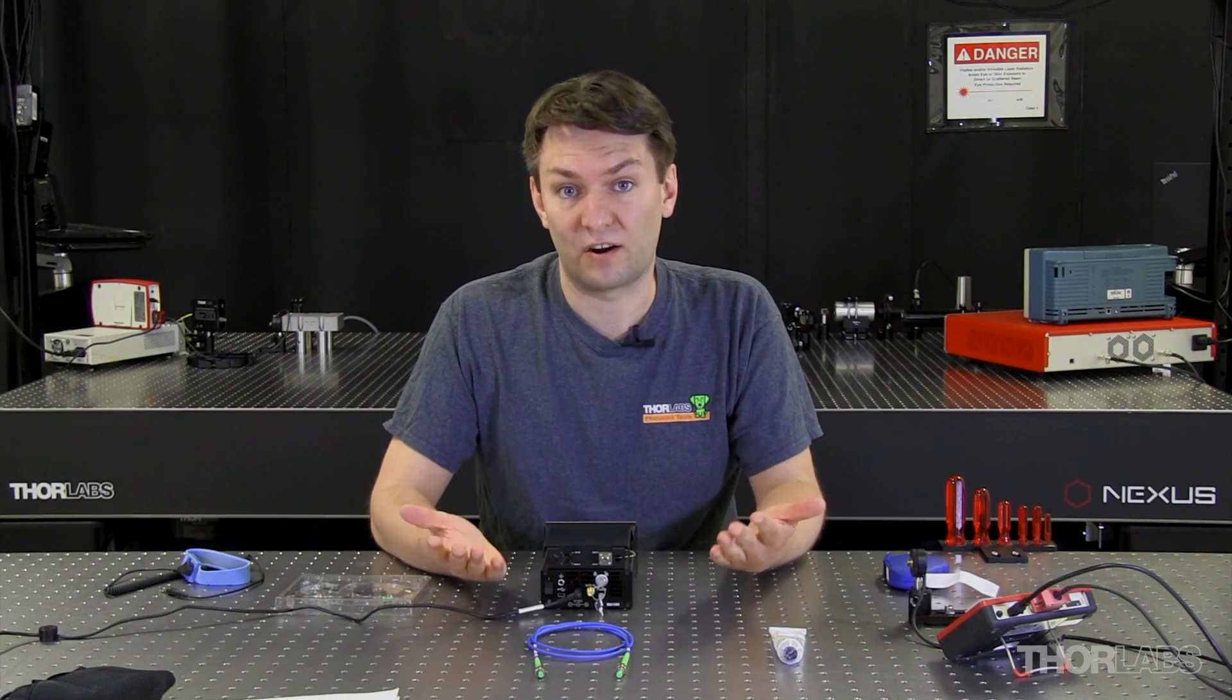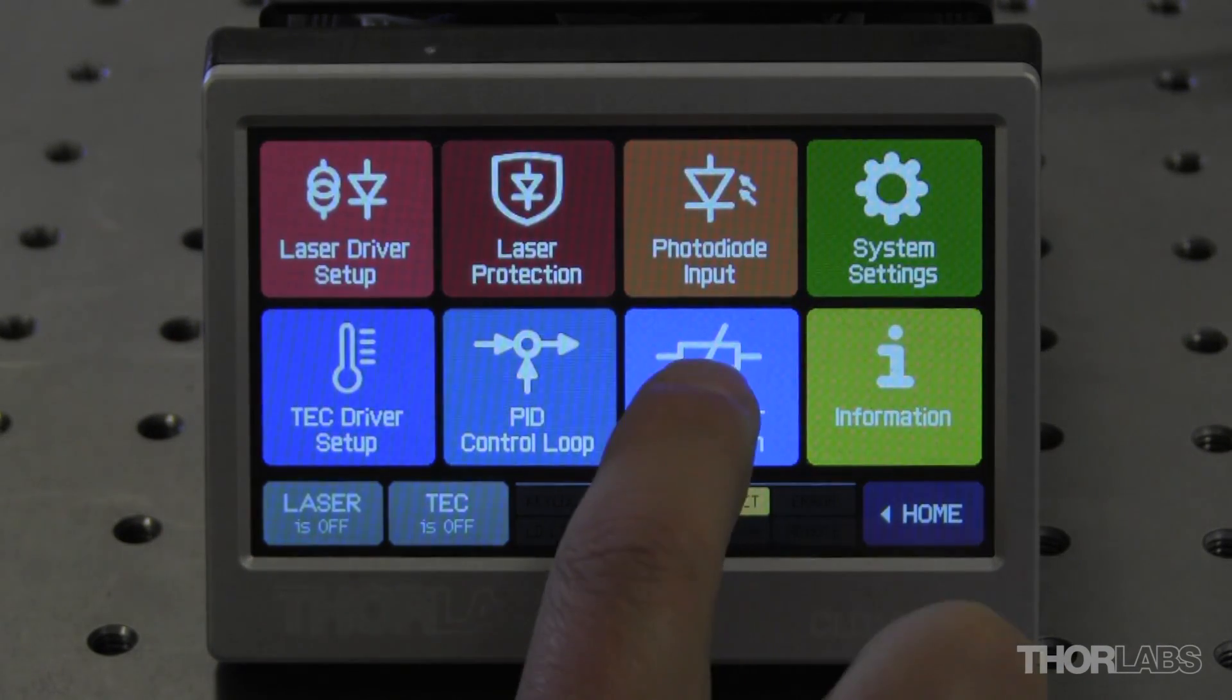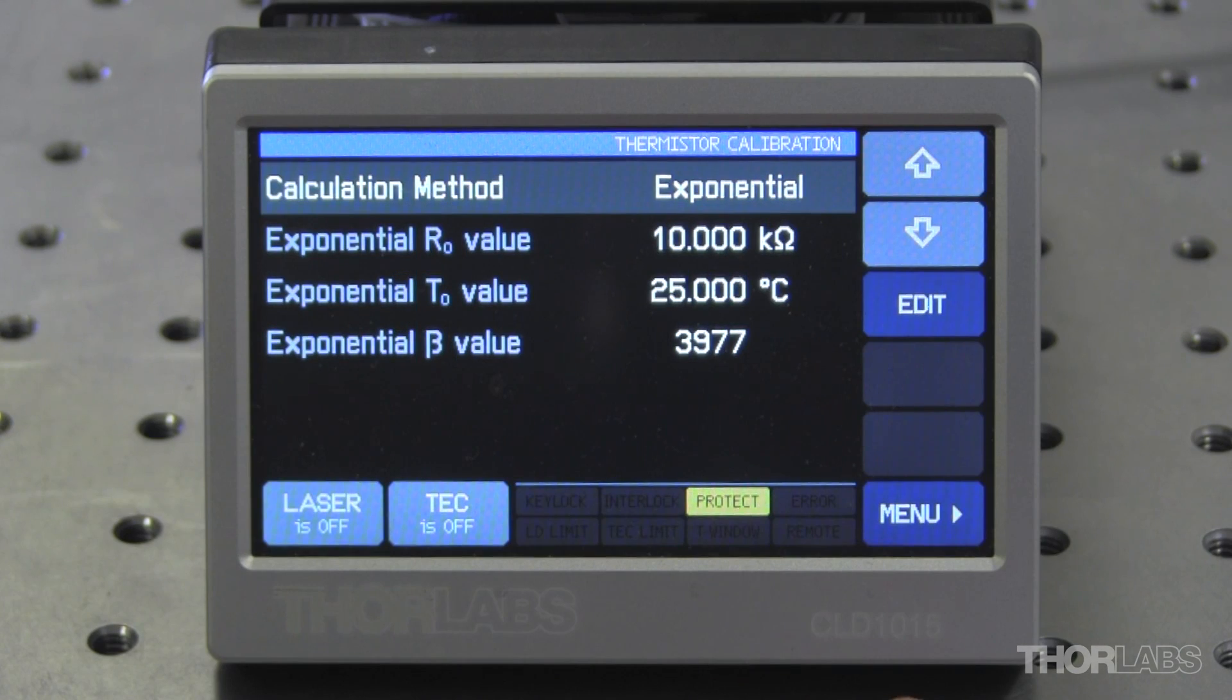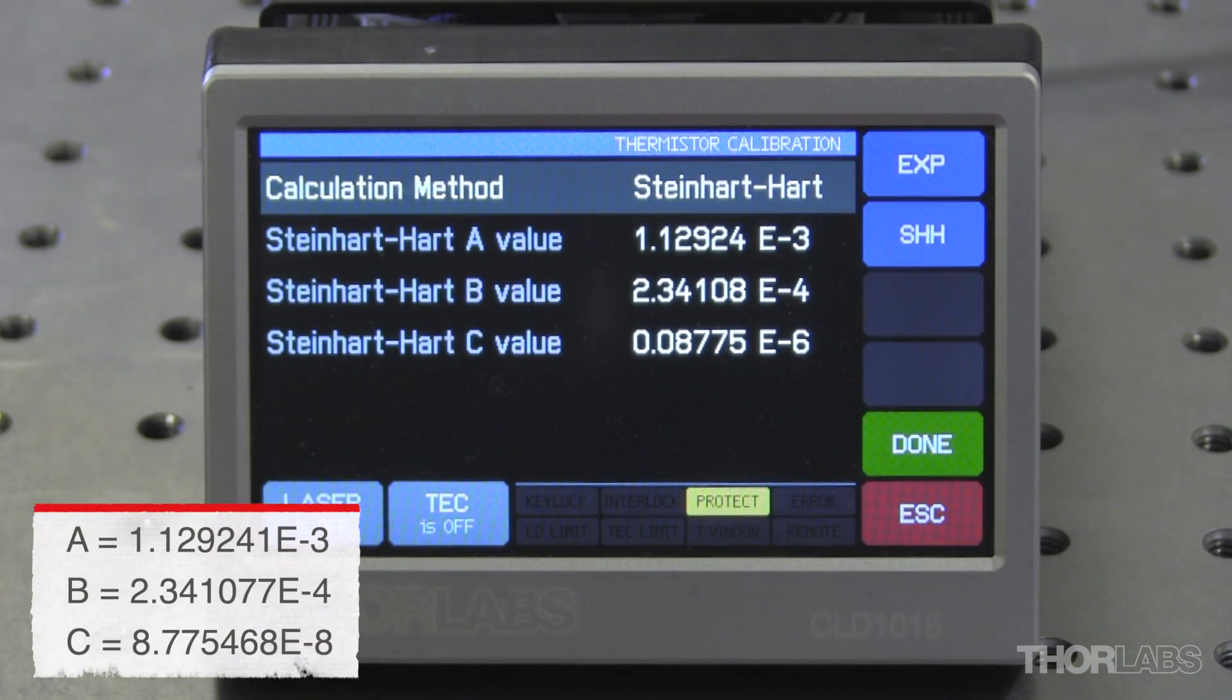With our butterfly packages, we typically have the Steinhardt-Hart coefficients. And so the first thing I will do is make sure that those coefficients are what's saved inside of our drivers. So I'll go into the thermistor calibration. And you see the first option is the exponential, which has our R0, T0, and beta. I'm going to switch that over to the Steinhardt-Hart. And make sure that my A, B, and C values match what's on the spec sheet for the laser that I plan to use.